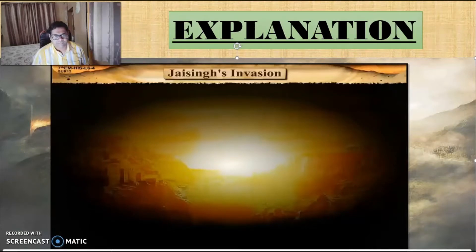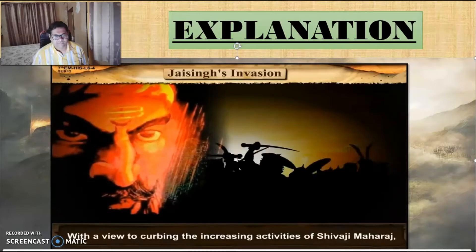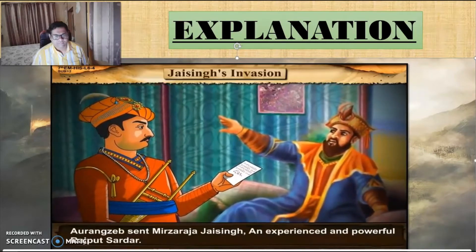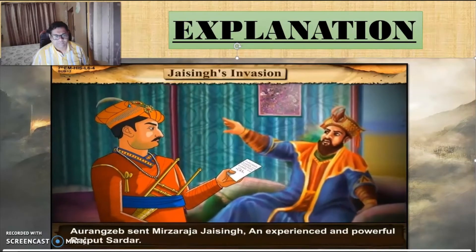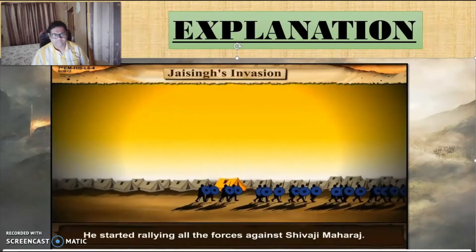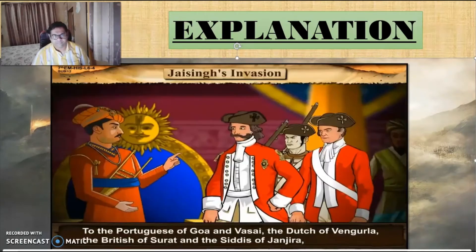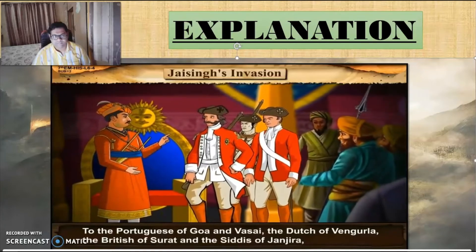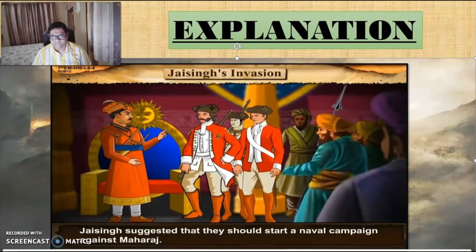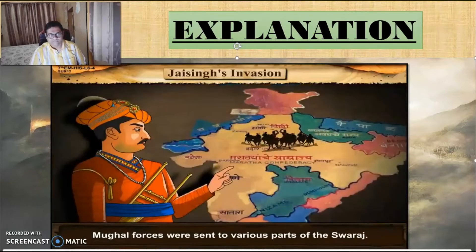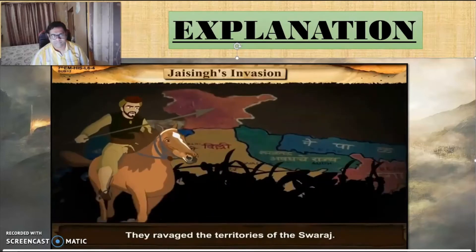Jai Singh's Invasion. With a view to curbing — meaning holding back — the increasing activities of Shivaji Maharaj, Aurangzeb sent Mirza Raja Jai Singh, an experienced and powerful Rajput Sardar. Jai Singh came to Pune and started rallying — meaning reforming — all the forces against Shivaji Maharaj. To the Portuguese of Goa and Vasai, the Dutch of Vengurla, the British of Surat, and the Siddhis of Janjira, Jai Singh suggested they should start a naval campaign against Maharaj. Jai Singh drew up a plan of capturing the forts in possession of Maharaj. Mughal forces were sent to various parts of the Swaraj, and they ravaged the territories of the Swaraj.